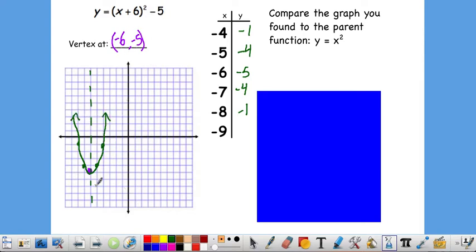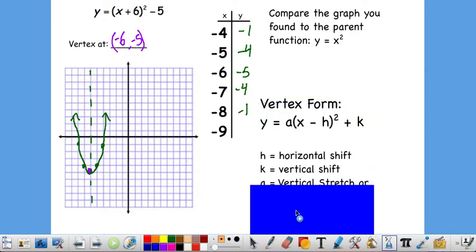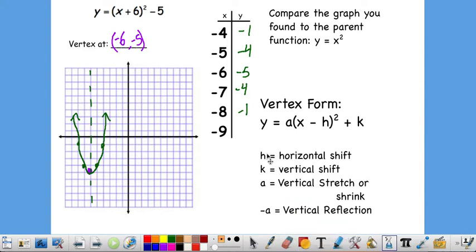So vertex form, you just get the vertex. You plug in a couple points to the right, reflect them to the left. Vertex form is also really nice for doing comparisons to the parent function. So in our general form, h, since that's the x part of our vertex, is our horizontal shift. k is our vertical shift, up and down.